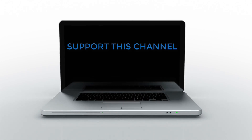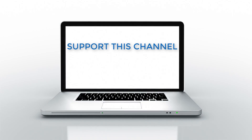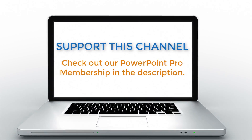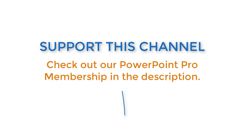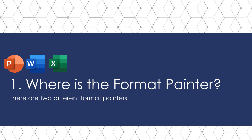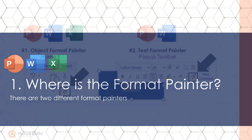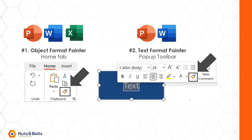But first, if you want to support the channel and learn everything there is to know about PowerPoint, check out our PowerPoint Pro membership in the description box below. So let's first look at where the Format Painter is — there are actually two different Format Painters. You have what I call the Object Format Painter, which you can find on the Home tab of PowerPoint, Word, and Excel. You're simply looking for this little paintbrush icon.